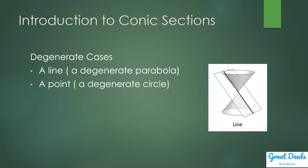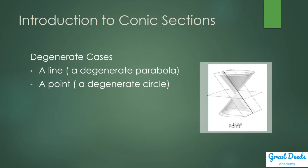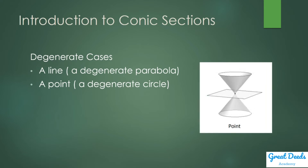A point is a degenerate case of a circle. We cut the cone with a plane parallel to the base, but we cut right at the join of the two nappes. The intersection is a point, not a circle.